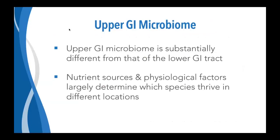The upper GI microbiome is substantially different from that of the lower GI tract — one way to potentially distinguish microbes detected in stool samples. It appears that some organisms detected in stool may actually be coming from the upper GI tract. Stool tends to be a mix of mostly local bacteria from the colon but also some bacteria and other microbes coming from higher up in the GI tract. Nutrient sources and physiological factors largely determine which species tend to thrive in different locations along the GI tract.